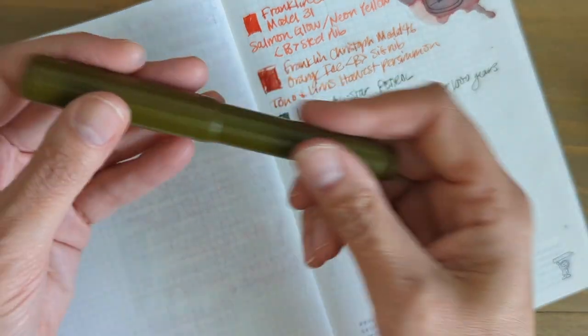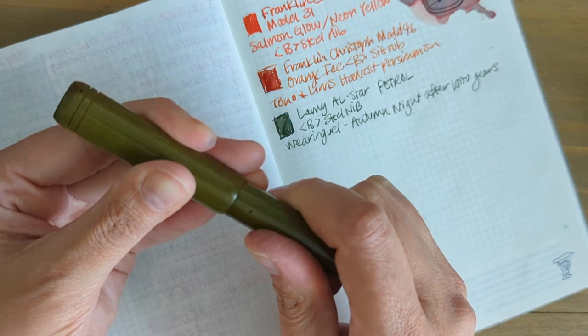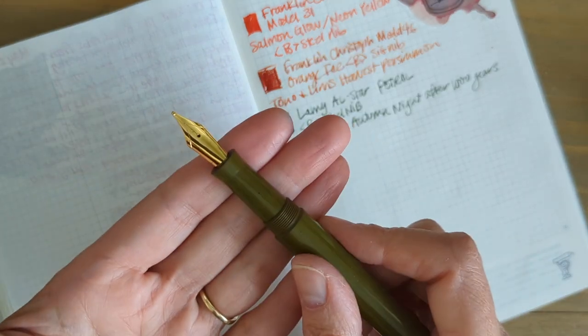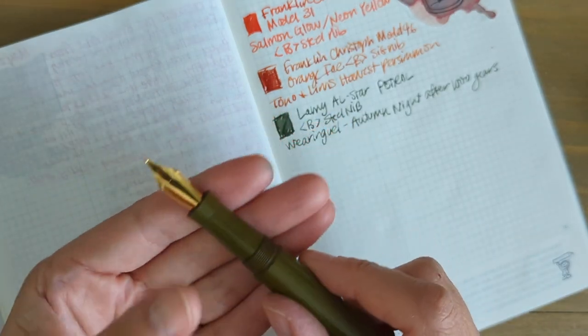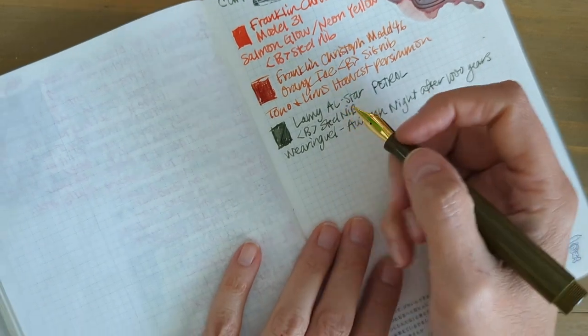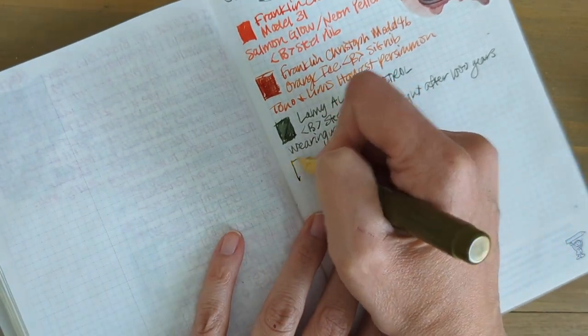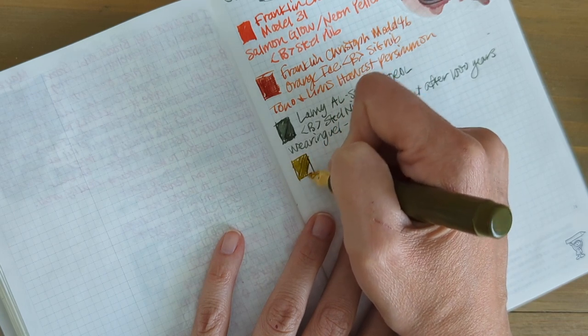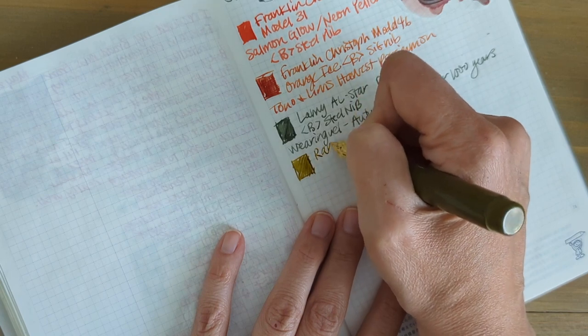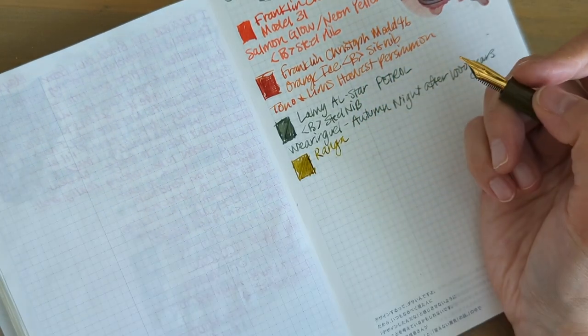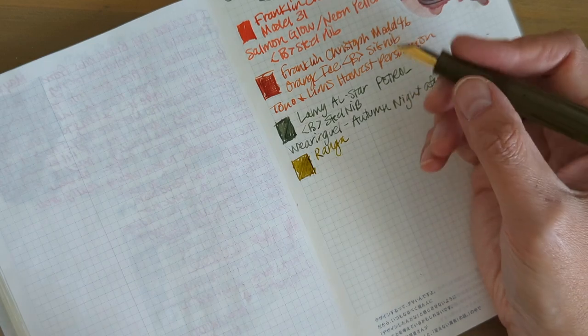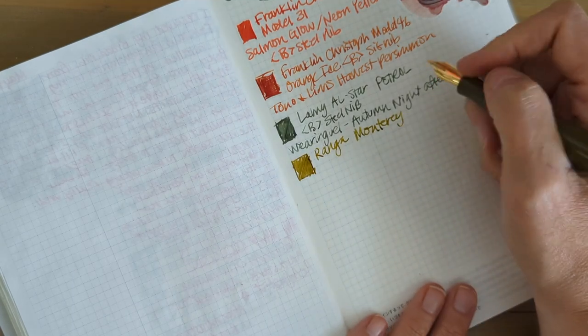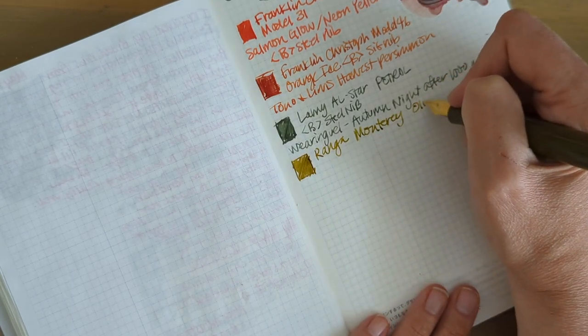Next up is my Ringa Monterey. I had to have the nib fixed on this one because when I had gotten it it was real scratchy. But I sent it back to Pen and Street Pens and they did a great job. They fixed it right up very quickly and got it right back to me. This is the collaboration that Ringa and Pen and Street Pens did together. It's got an ebonite body. I got it in the olive green color.